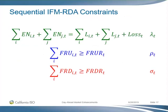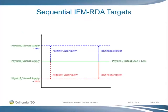Carrie Bentley with the Western Power Trading Forum: Can you go back to the picture? I keep getting confused because I want to compare it to the flexible ramp-up requirement in real time, which procures the need between intervals T and T plus one. That's the real ramping requirement plus uncertainty. But this formulation looks like it's just the uncertainty.